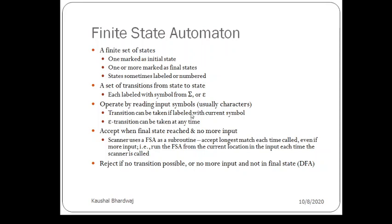You will read input symbols and decide which transition rules are applicable. Epsilon transitions can be taken at any time — even if there is no input, you can transit from one state to another. As input comes, you keep changing your state and may reach a final state. If you are in a final state and there is no more input, the string is accepted. If you are not in a final state, you will reject the string.